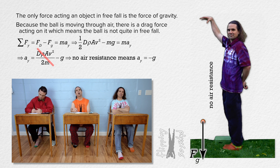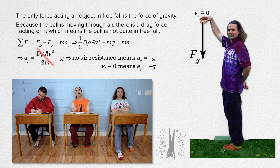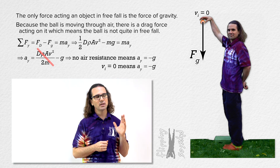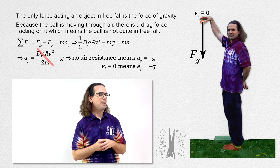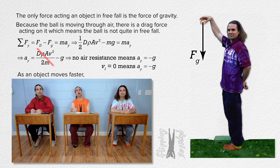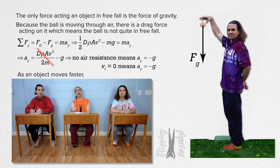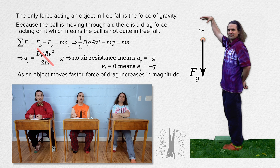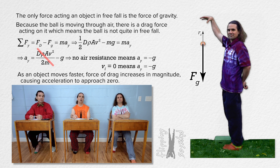Because the initial velocity equals zero and therefore the initial drag force equals zero, the initial acceleration of the ball equals negative 9.81 meters per second squared. As the object moves faster, the velocity of the ball increases in magnitude, causing the force of drag to increase in magnitude, causing the acceleration of the ball to get closer and closer to zero.